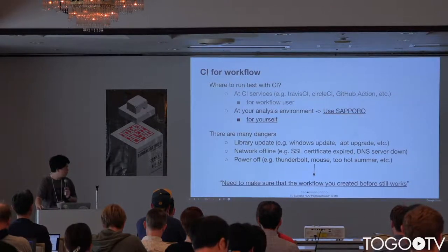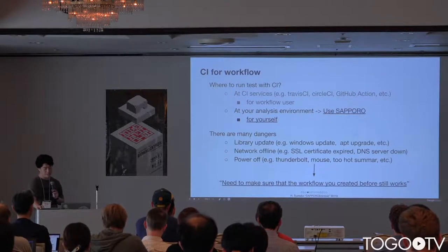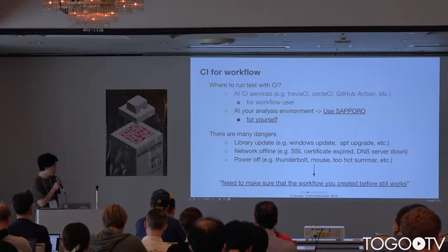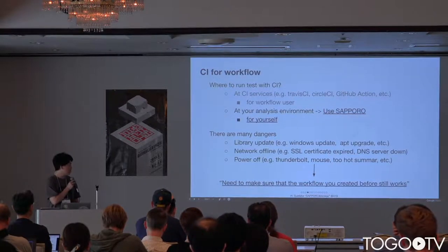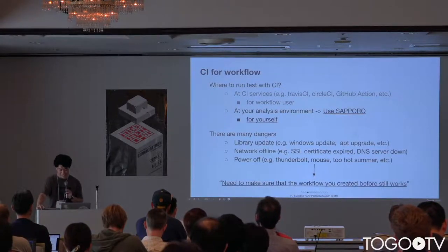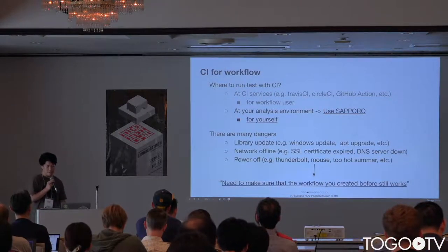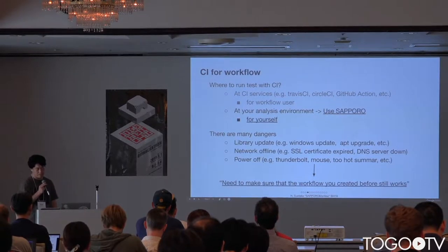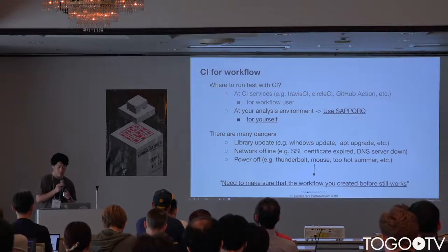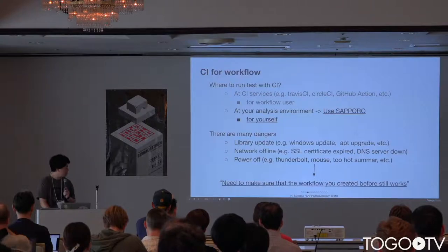For example, Windows updates, after update SSL certificate expired, DNS service down, thunderbolts. Last days, AWS has gone down by a storm. So when revising your paper, you should avoid the situation that the workflow created before does not work. We need to make sure using CI in our analysis environment.